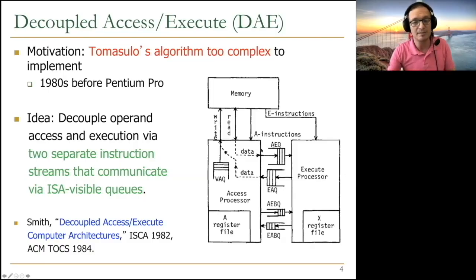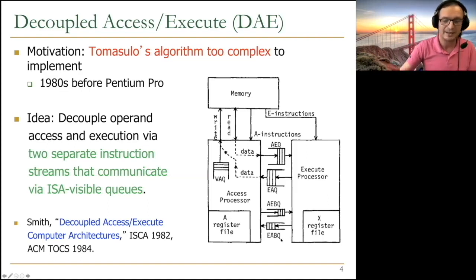Queues can be scalable because it's a FIFO queue, and these are all FIFO queues. There's also a branch queue because you need to keep these synchronized as well. All of these are FIFO queues.